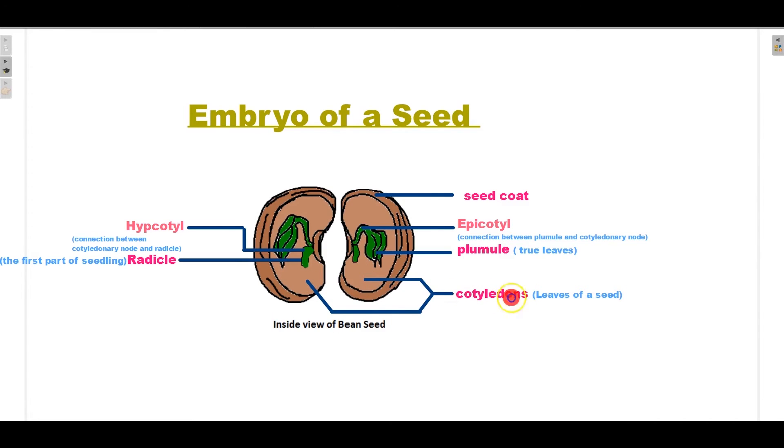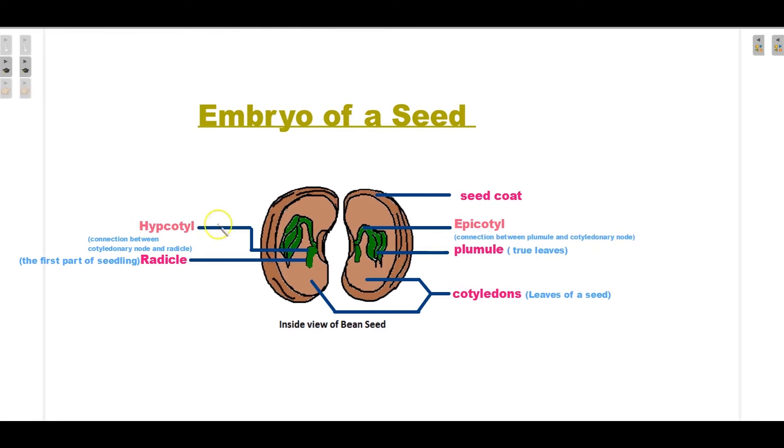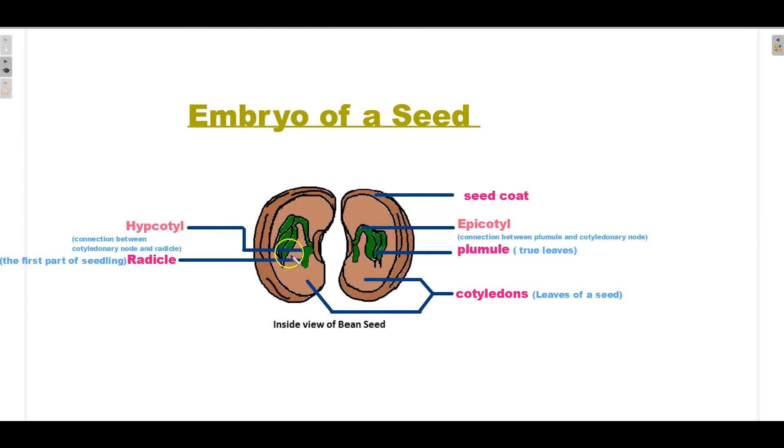Next, radical. Radical is the first part of the seedling. Plumule develops into true leaves. These leaves, when they are small, are called plumule. Hypocotyl is the connection between the cotyledon and the radical. It is a base stem which is situated between cotyledon and the radical.